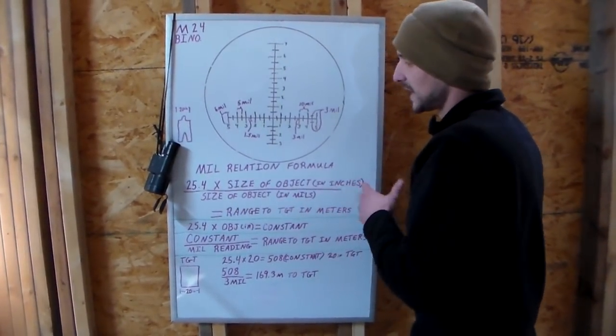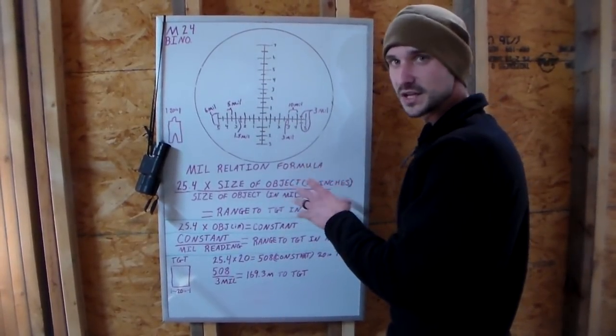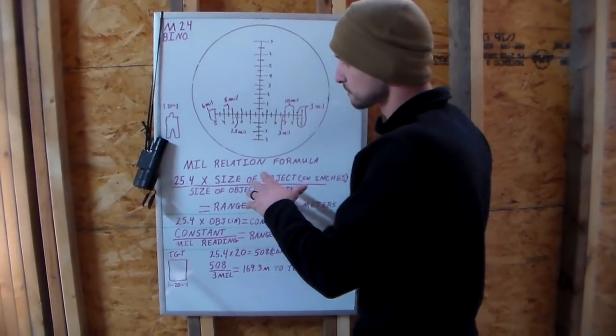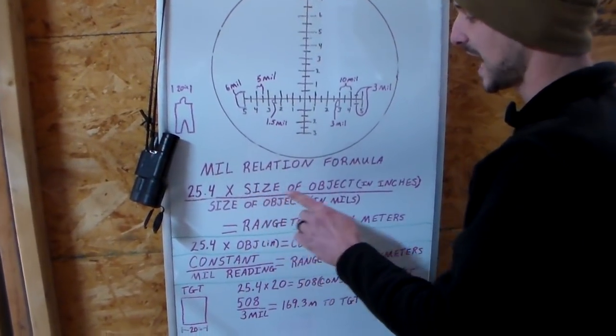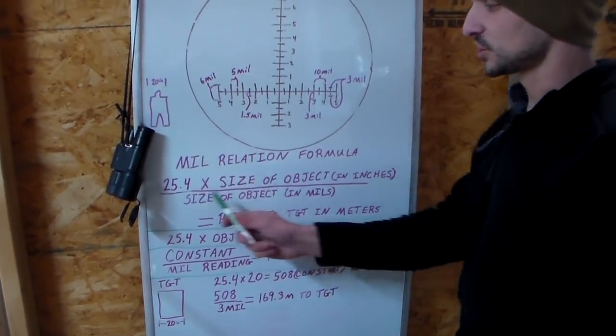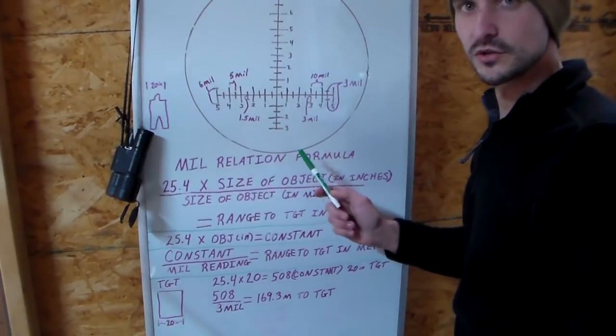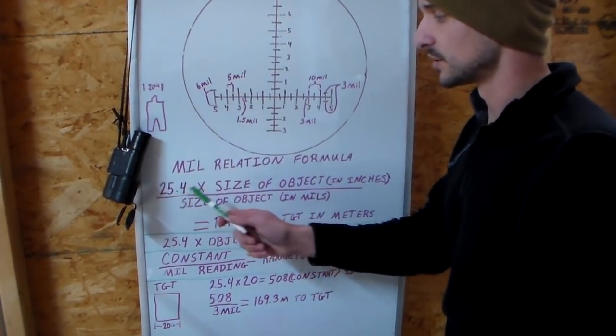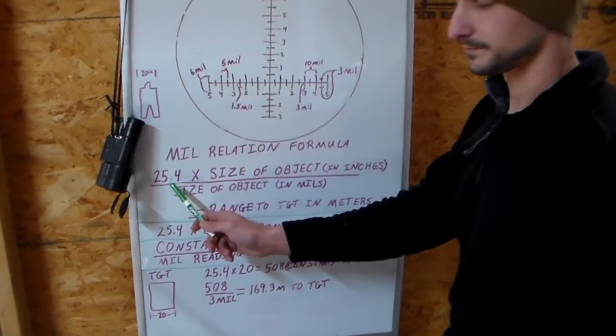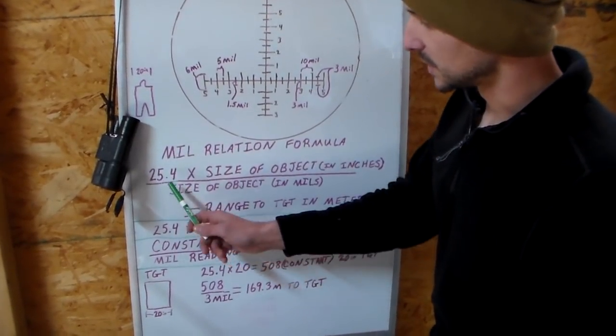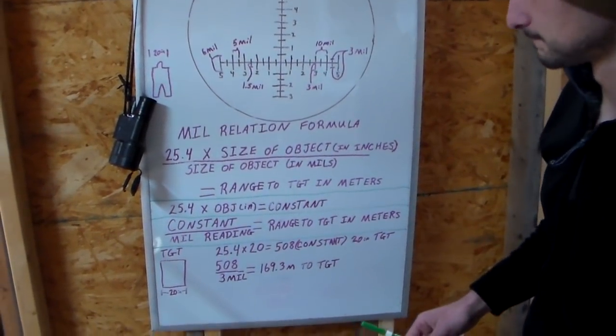So our mil relation formula that I prefer is measuring the target in inches. There's other formulas out there that measure the target in meters, but this is the one I prefer, this is the one I use the most. And this formula is 25.4 times the size of the object in inches. Now this 25.4 will always stay the same for this formula. You're not going to find this number in your reticle, this number stays with this formula every time. If you're using inches, it's going to be 25.4. And you're going to work this top section.